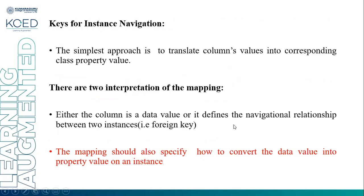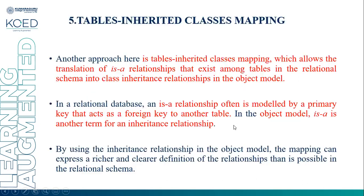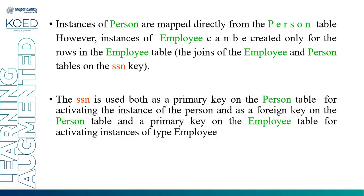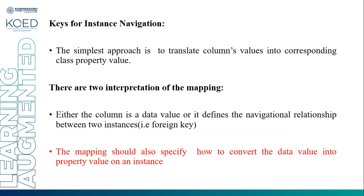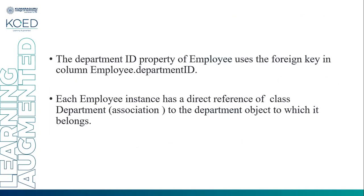This is known as a table and multiple class mapping, achieved through the primary-foreign key relationship. In object-oriented terms, this is known as an association that references another association. Thanks for watching the video lecture. Thank you.